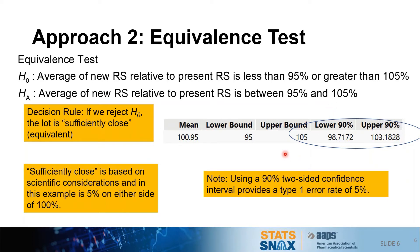One point that often causes confusion in equivalence tests: the output shows 90% two-sided confidence intervals, whereas you may be more familiar with 95% confidence intervals. In this equivalence test, because we must satisfy both a lower and an upper range of the alternative hypothesis, we conduct what's called two one-sided tests — TOST. By calculating a 90% two-sided interval, we actually achieve a Type I error rate of 5%, which is the typical norm for such a test.